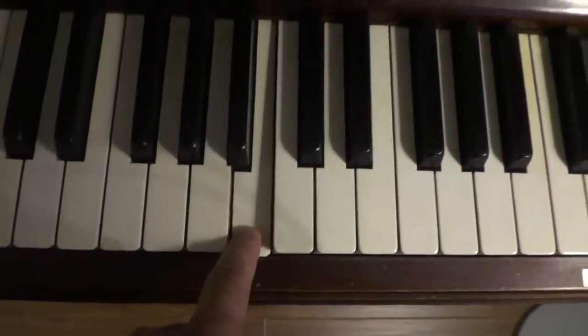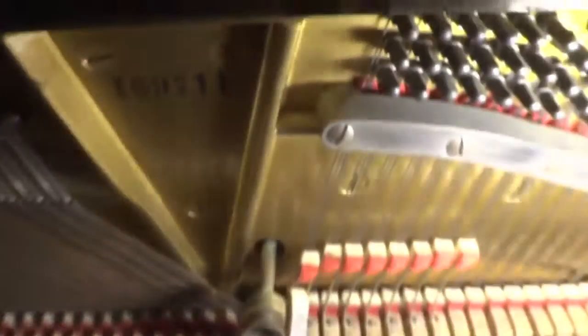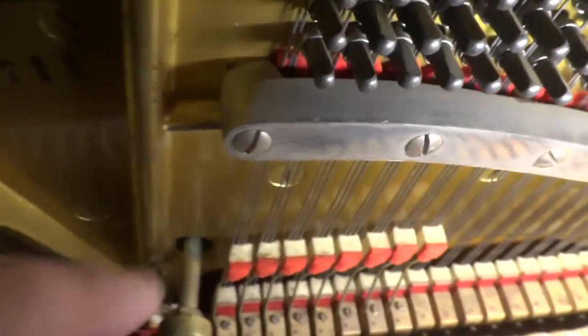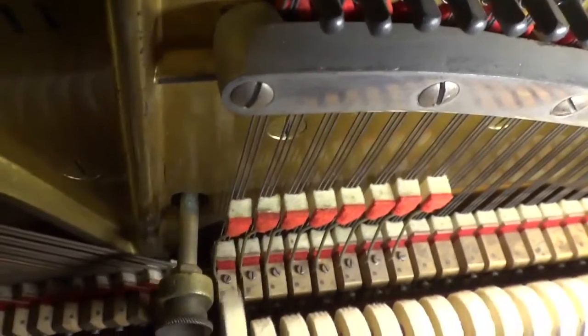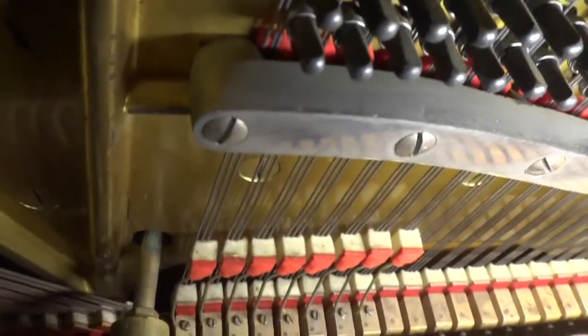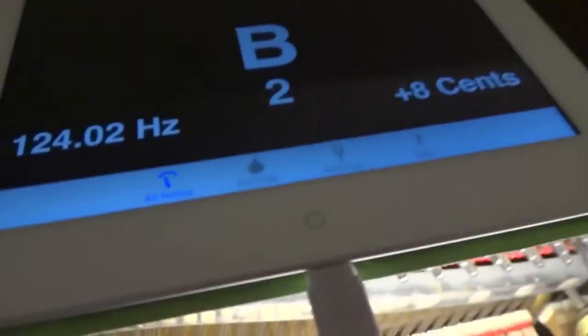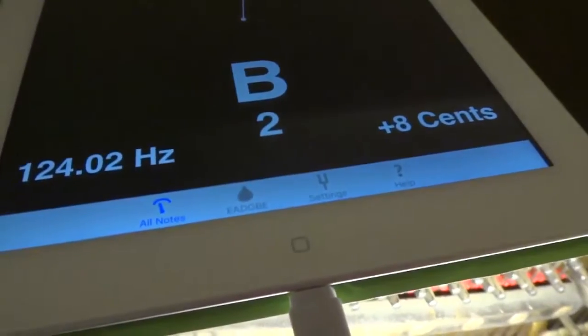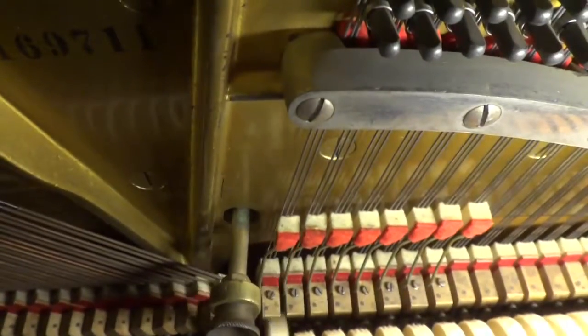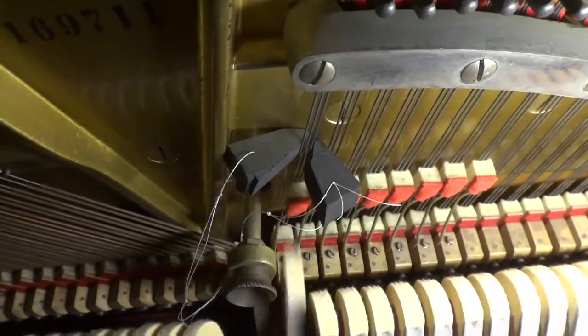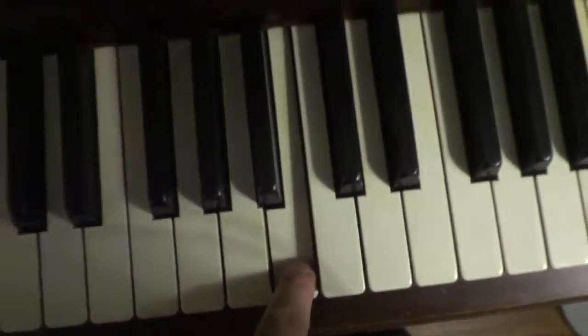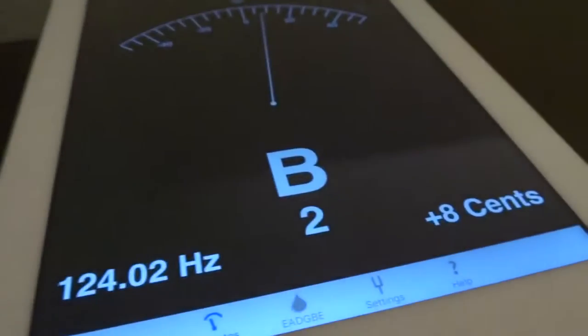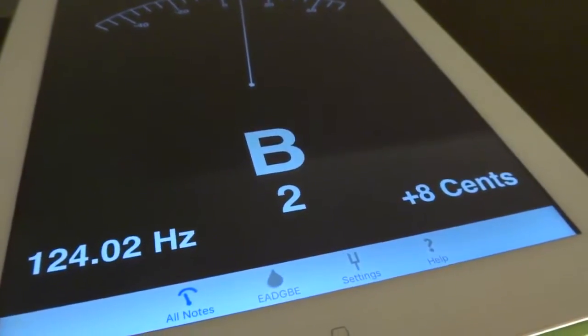B2. B2 is the first one in the triple string group. This one here. The reading is a little sharp, plus eight cents. So insert rubber mutes. So that is B2, plus eight cents.